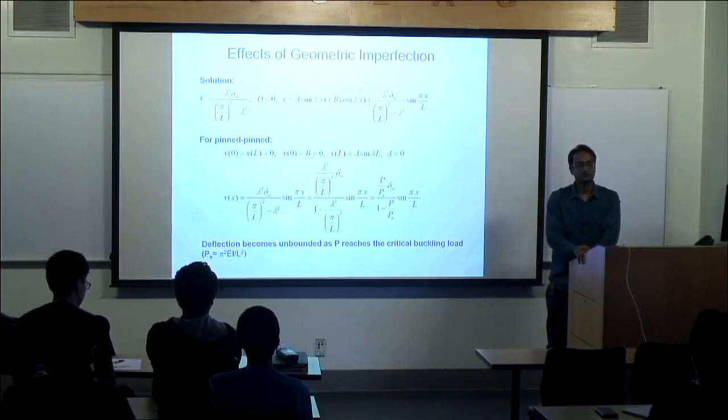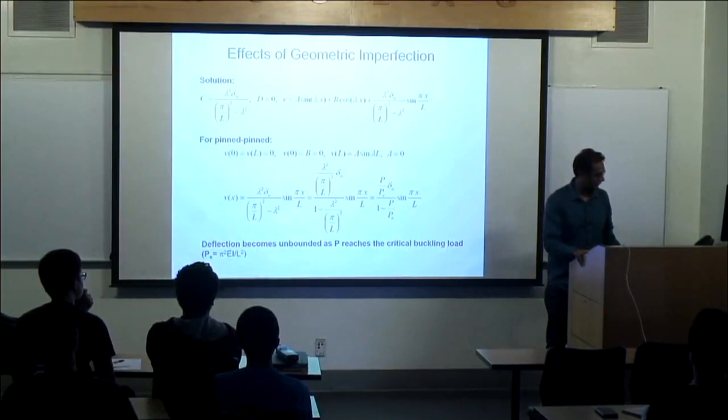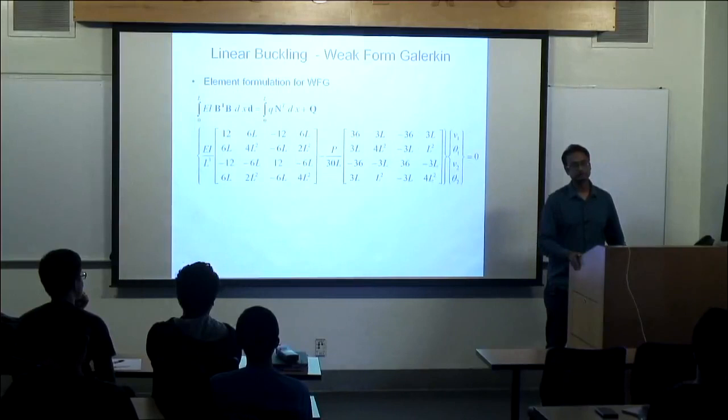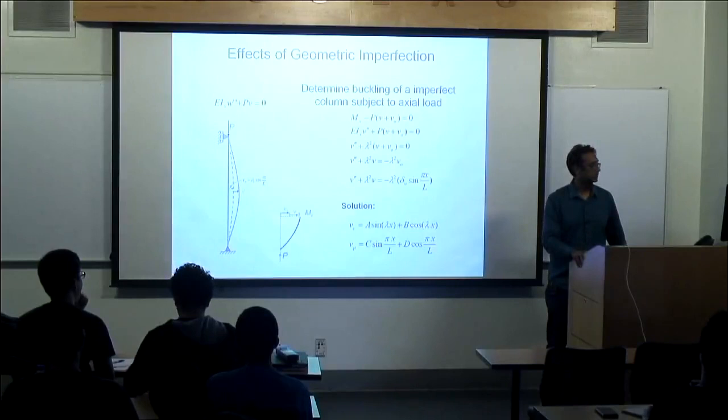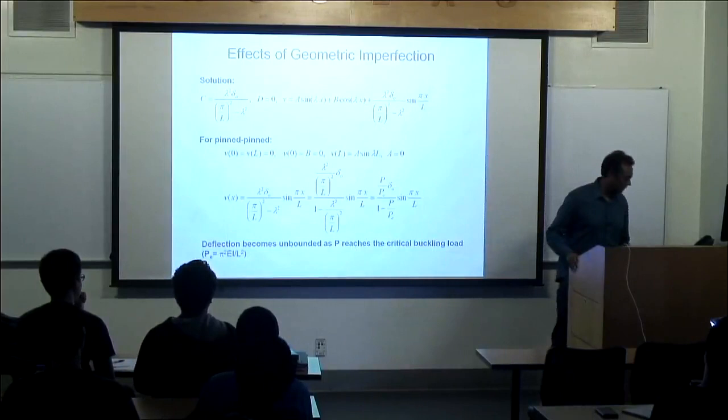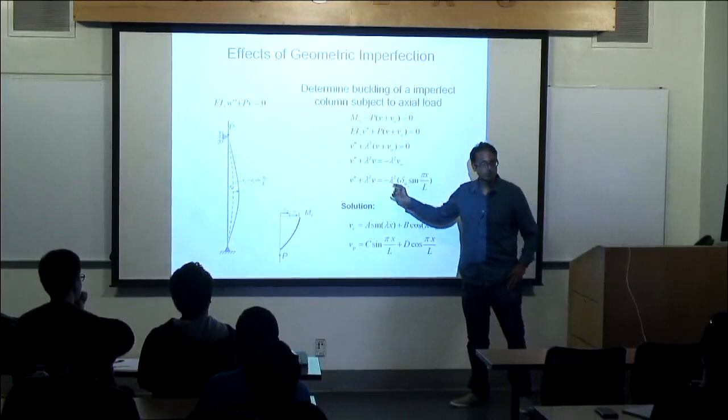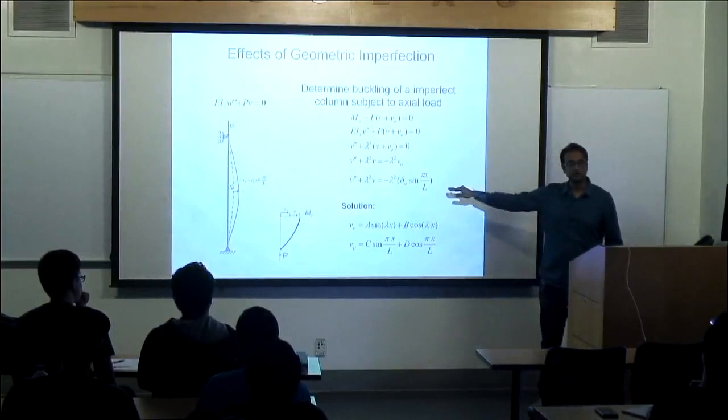We could have used the total potential energy to derive this — we can use that energy approach to solve this problem and would get the same answer. We can also use a weak form: multiply by a weight function, integrate it, and use weak form. I wanted to show the closed-form solution here to explain the effects of imperfection.